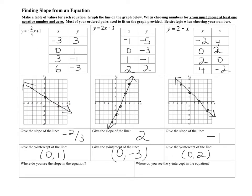So when you are checking to see if you did this correctly, look at your lines first. Does your line go in the same place as my line? Also make sure you put arrows at the ends of your lines. The ordered pairs — since we picked these numbers together — these ordered pairs should match. Over here I just picked negative 1, 0, 1, and 2, and this is what I calculated to get them.